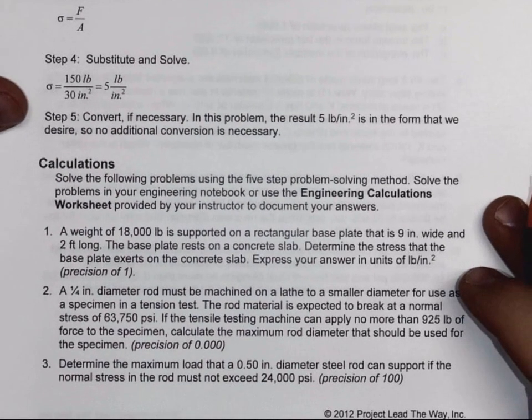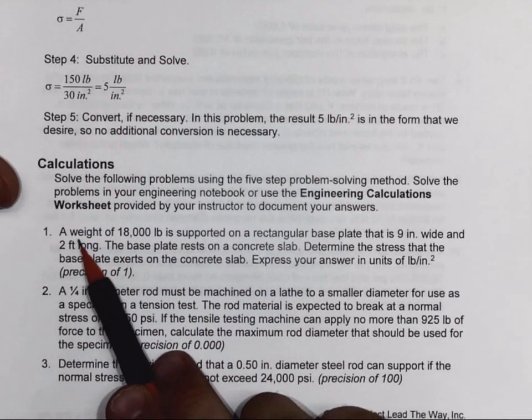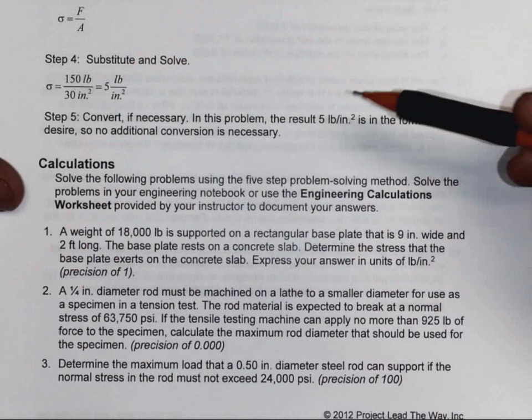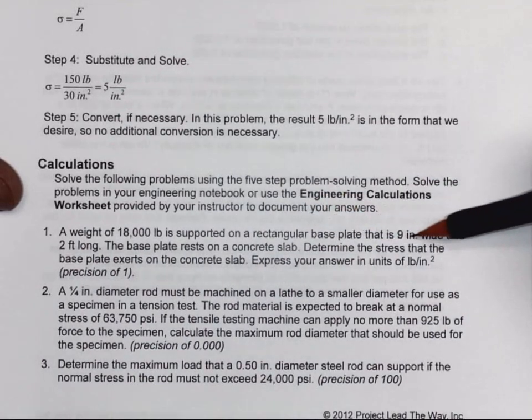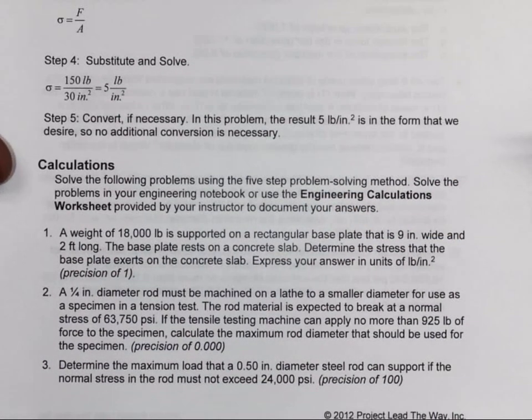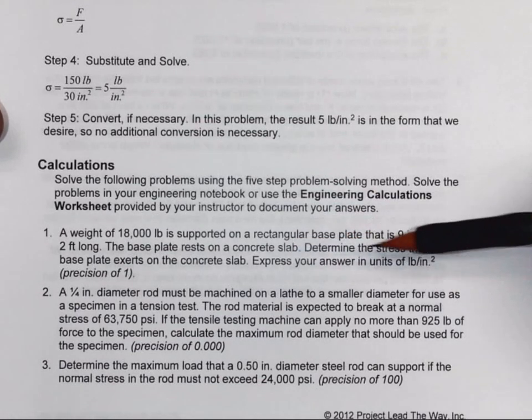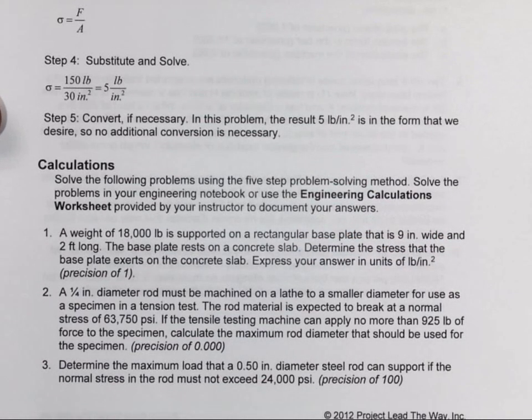So number one here is the one I'm going to focus on. A weight of 18,000 pounds is supported on a rectangular base plate that is nine inches wide and two feet long. The base plate rests on a concrete slab. Determine the stress that the base plate exerts on the concrete slab. Express your answer in units of pounds per square inch.